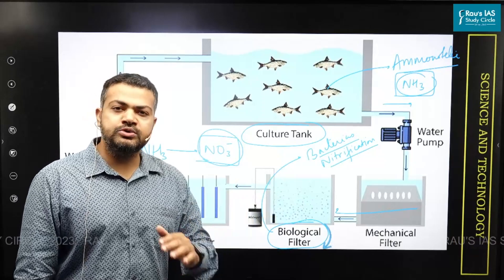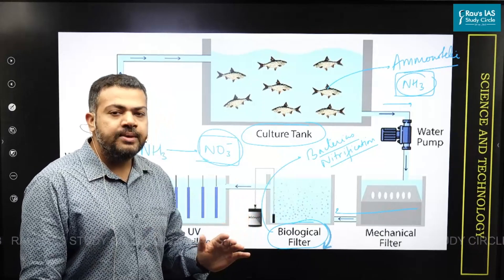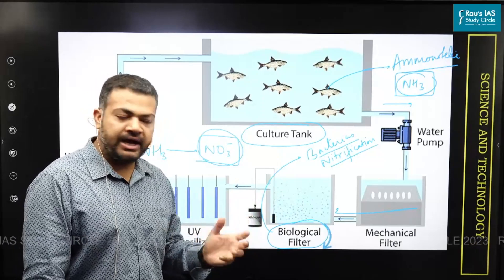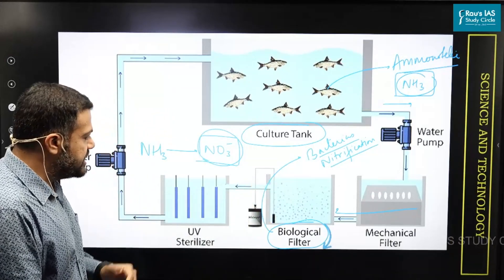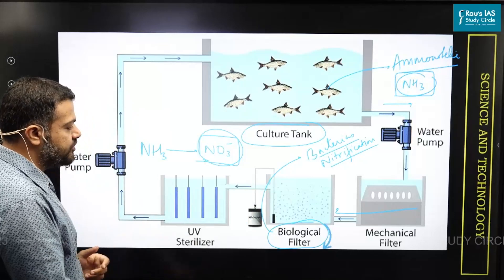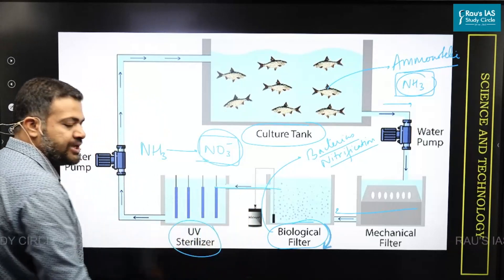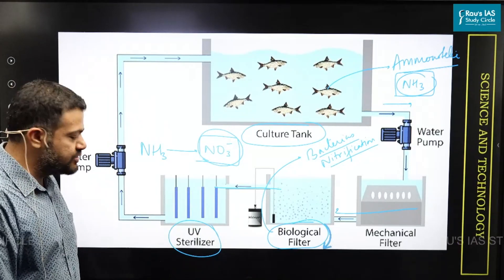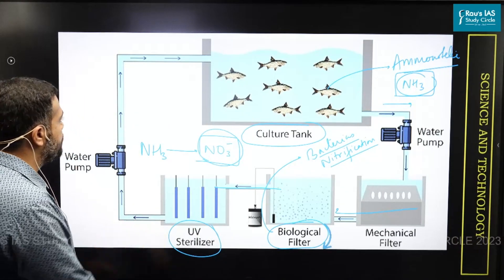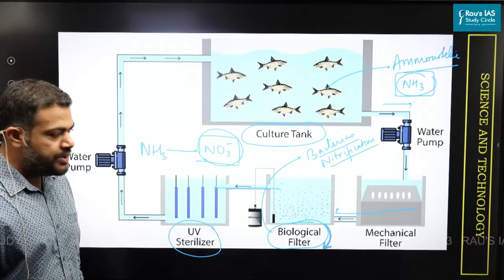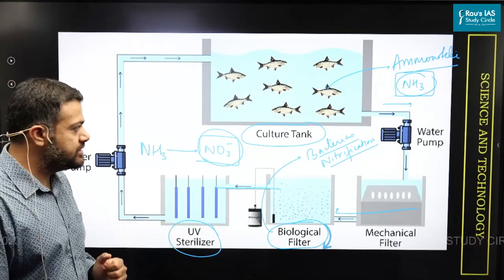Nitrates are also not considered good for the fishes, but they are not considered to be as harmful as ammonia. This is one way of managing the nitrogen cycle. Eventually, whatever water is left is perfectly sterilized using UV radiation, which kills all the contaminants, and the water eventually goes back into the culture tank. This is how we understand the function of biofilters.